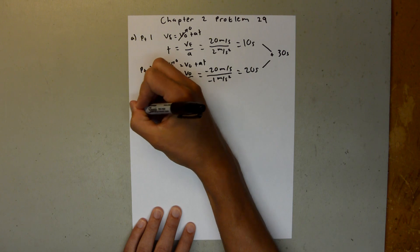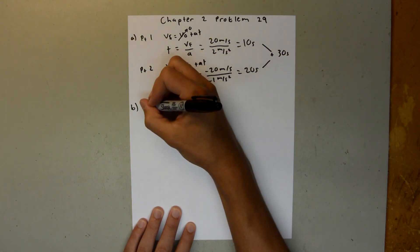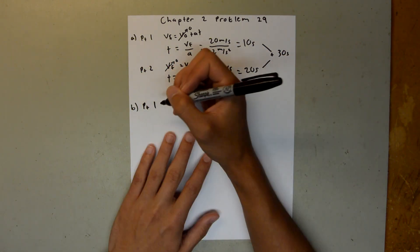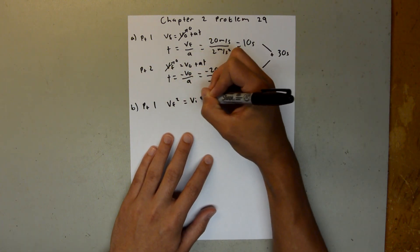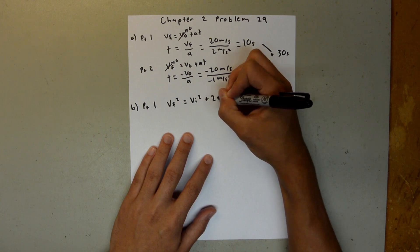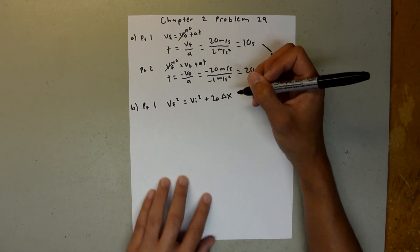And then for Part B of this problem, we can do the same thing, split it up into two pieces, but this time we're going to use the equation V final squared is equal to V initial squared plus 2A delta X, so we get that distance piece.